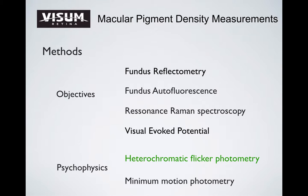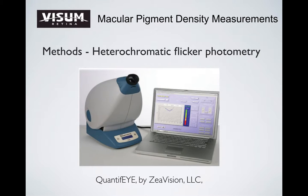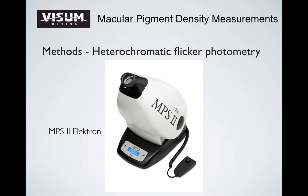The two psychophysics methods are heterochromatic flicker photometry and minimal motion photometry. For heterochromatic flicker photometry, the equipment determines pigment density by presenting a light stimulus of alternating wavelengths until no or minimal flicker occurs. Stronger blue light is required for minimal flicker to reach the receptors. Two pieces of equipment use this technique, including the MPS-2, which is commercially available.